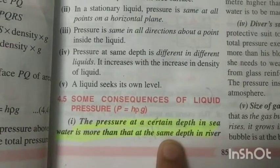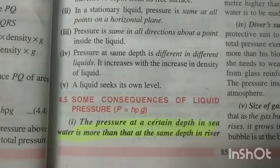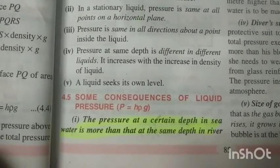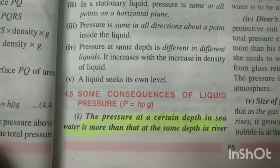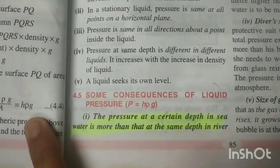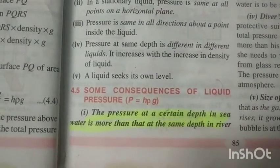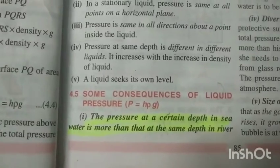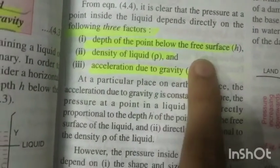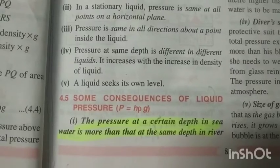First consequence: the pressure at a certain depth in sea water is more than that at the same depth in river water. Why? The reason lies in density. The density of sea water is more because sea water contains salt. As I told you, if density increases, pressure also increases. So if the density of sea water is more, then the pressure will be more.